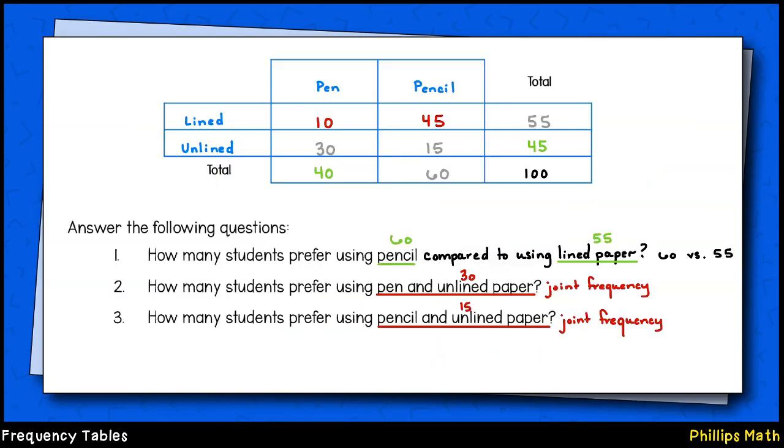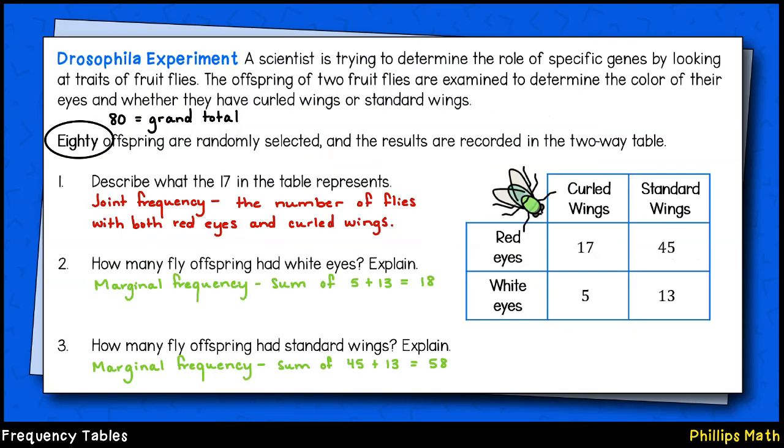Now, we can answer a few questions using those frequencies. How many students prefer using pencil? That's 60 compared to those using lined paper, that's 55. How many students prefer using pen on unlined paper? That's a joint frequency, which is 30. How many students prefer using pencil with unlined paper? That's also a joint frequency, and that's 15.